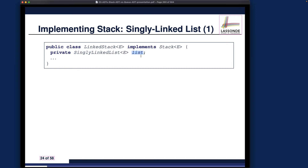Any method you want to support to implement the stack interface — like pop, push, top, size, isEmpty, etc. — should be defined in terms of the list. Rather than showing the code directly, I'd like to talk about two different strategies of implementation using the singly linked list, and then you can think about whether using a doubly linked list instead would help performance.